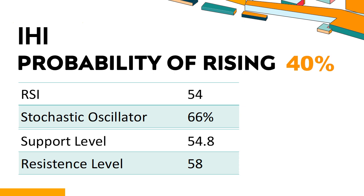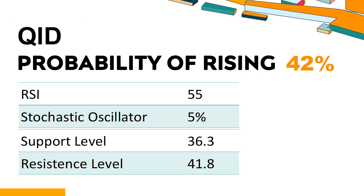IHI's short-term resistance level is 56.9. If it breaks through 56.9 during the session, it will look up to 58.